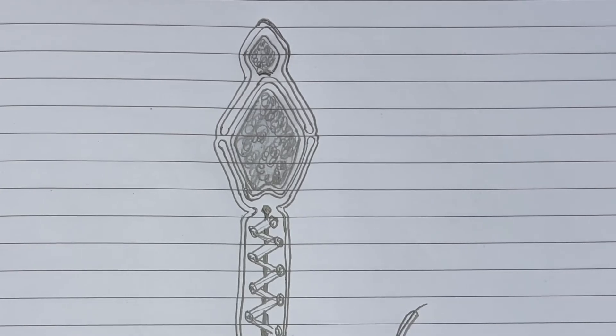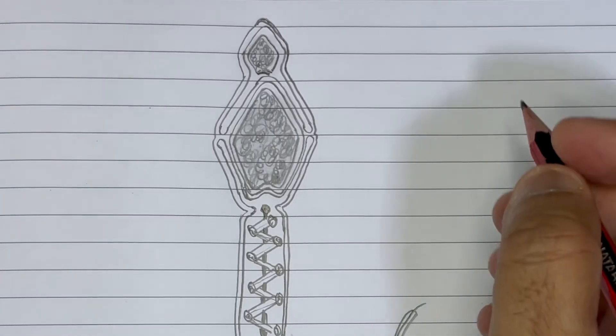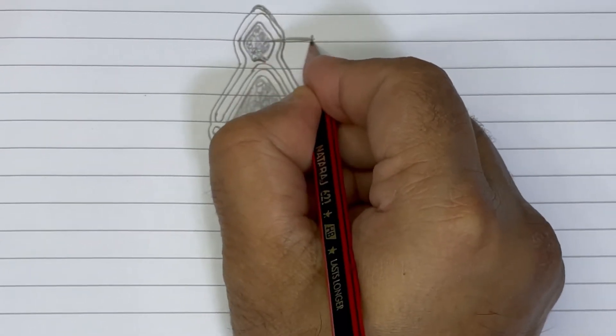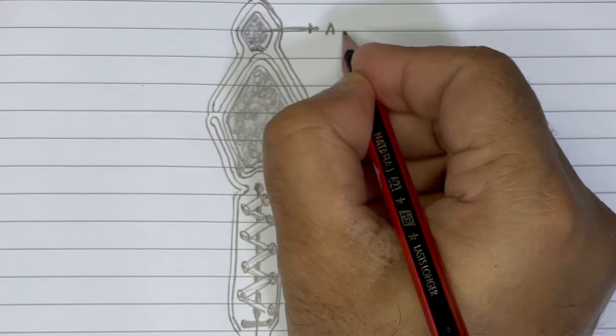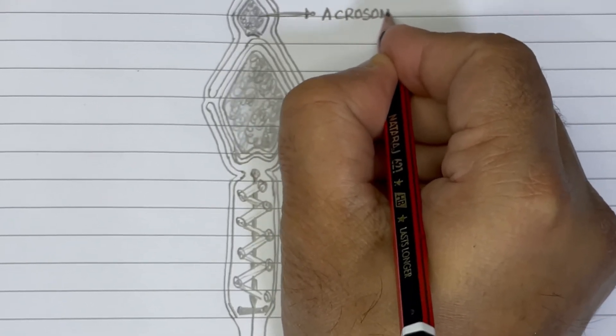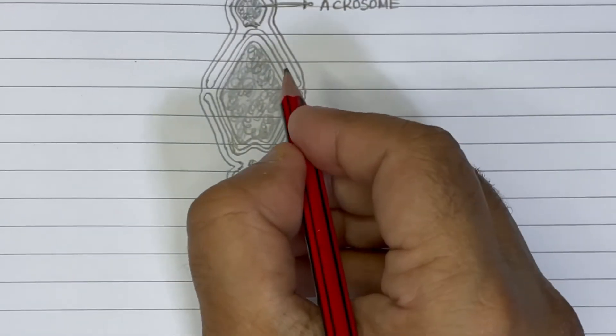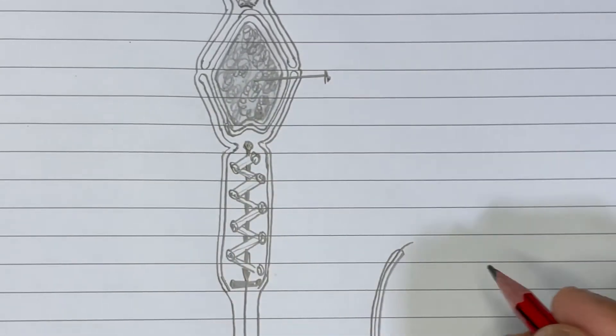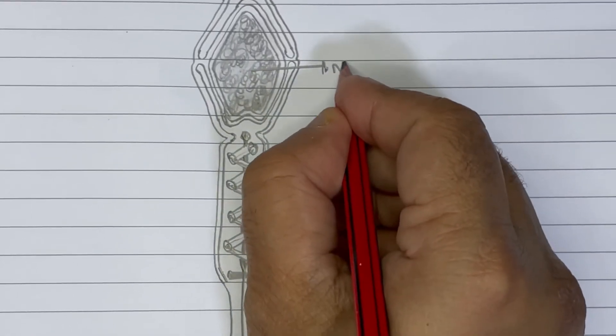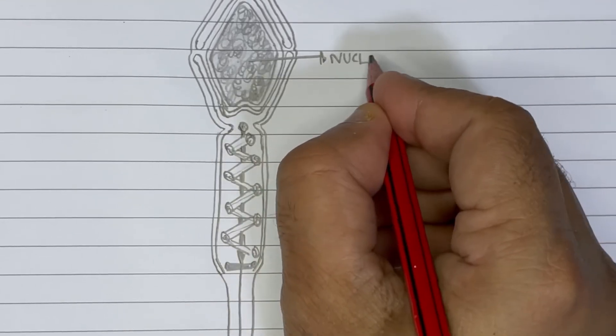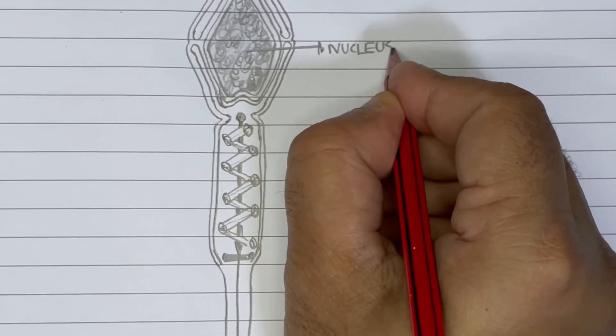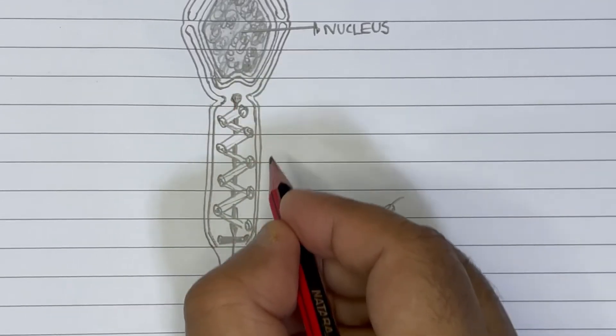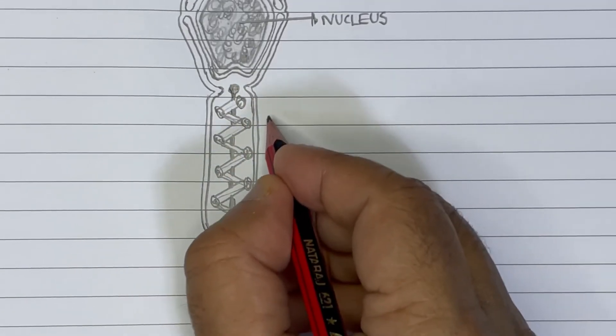We have done the structure of the sperm. Now let's label. So this is the acrosome, and this is the nucleus. And this is the basal body. Let's go for this part, the neck.